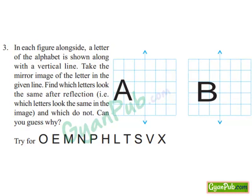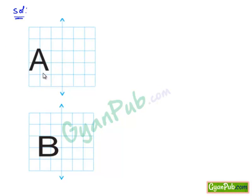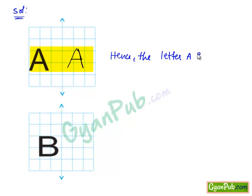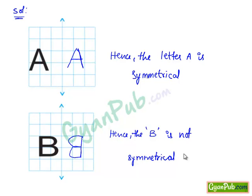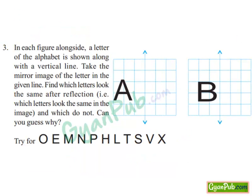Let's move on to the solution. Here we have the letter A. If we write its mirror image, we get A again — it looks similar. Hence A is symmetrical. If we see B in the mirror image, we get a reversed form. It is not similar to B. Hence the letter B is not symmetrical. They have asked us to check certain letters — let's check whether they are symmetrical or not.